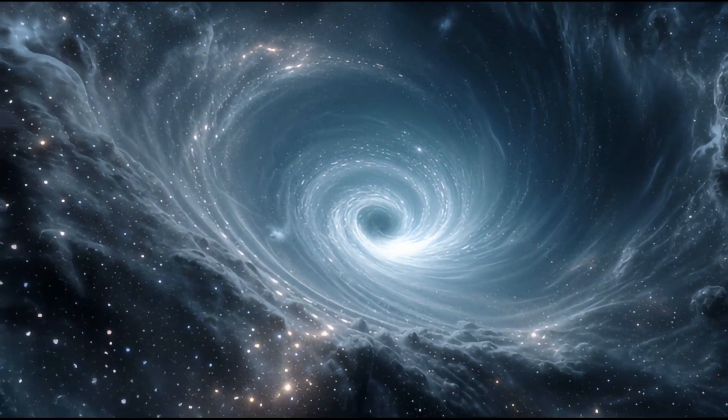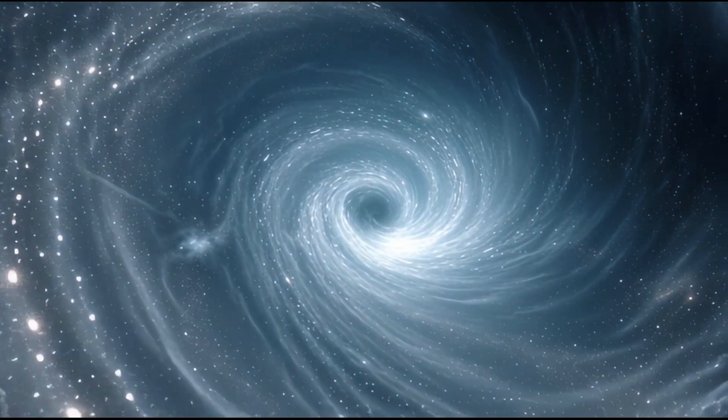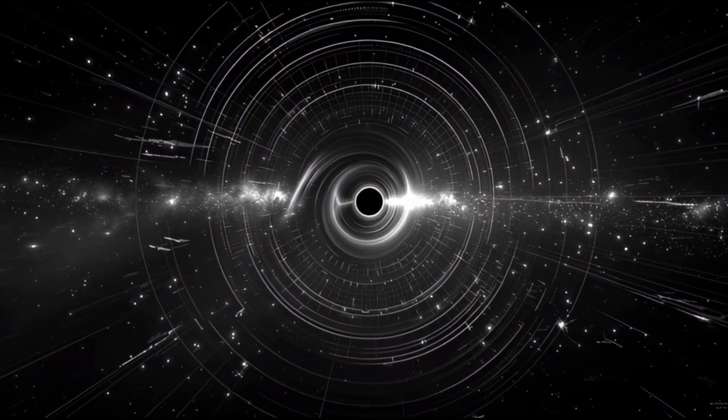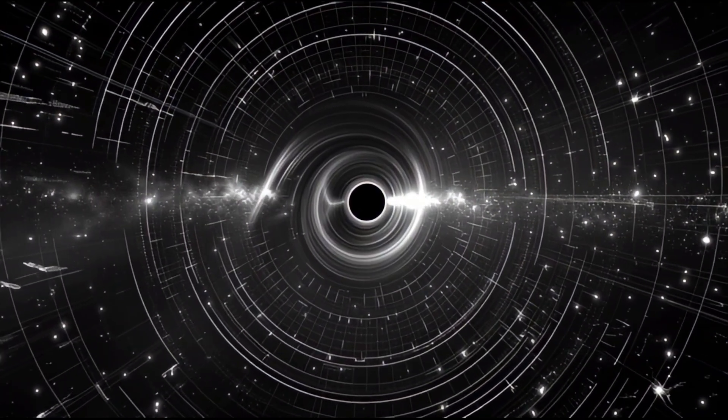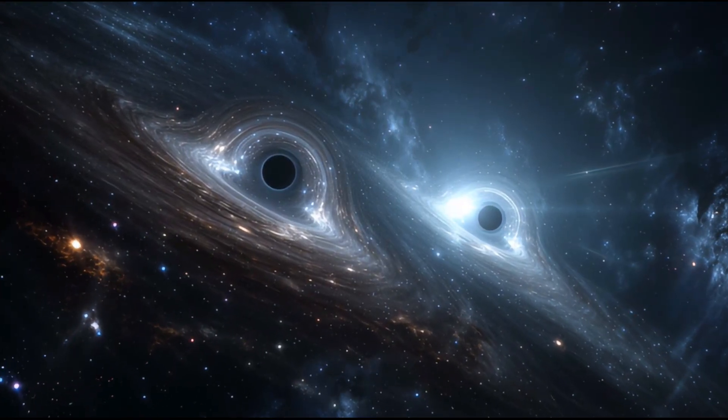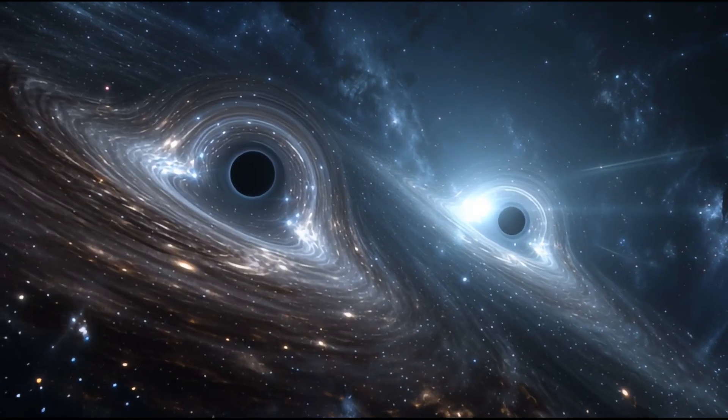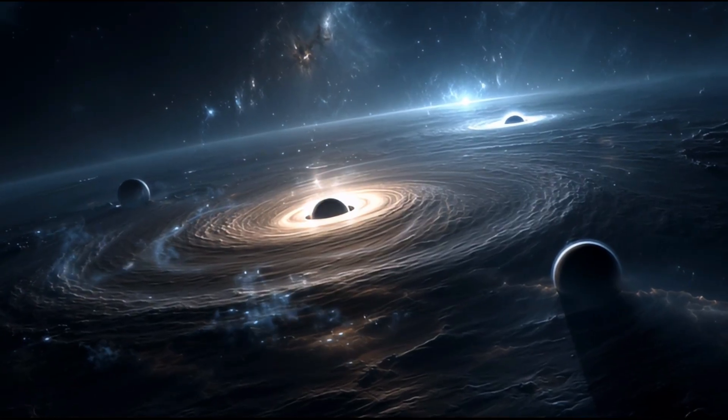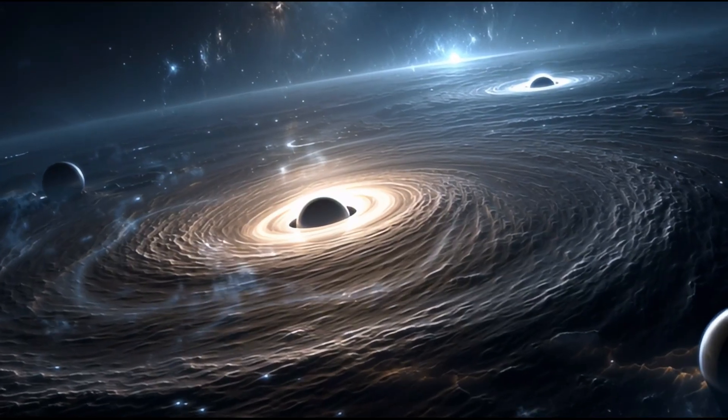Here's something that challenges our understanding. The final parsec problem. When supermassive black holes from merging galaxies approach within about a parsec, 3.26 light-years, of each other, dynamical friction from surrounding stars becomes inefficient. They should stall at this separation, yet we know mergers must happen because we observe their aftermath. Solutions range from invoking massive gas disks that weren't previously considered, to triple black hole interactions, to modifications of how we understand gravity at these scales.